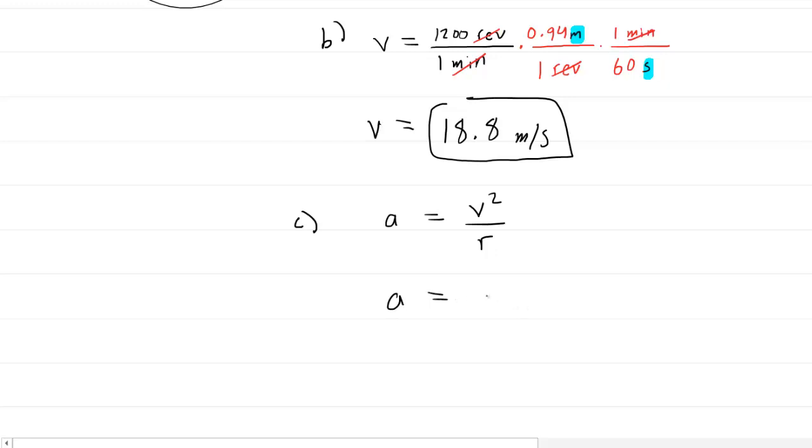Nice and straightforward. So we take the speed that we just determined in part B, and we square it, and then we divide by the radius.